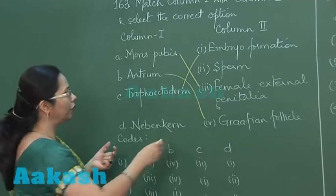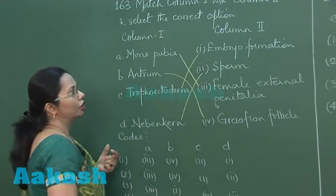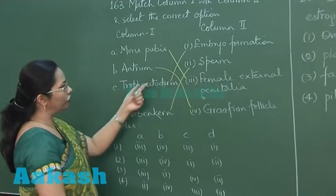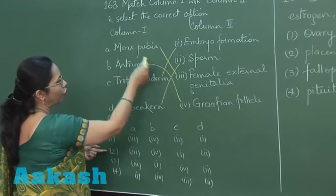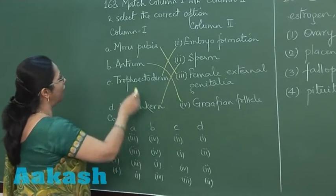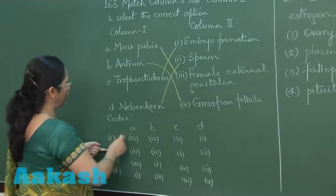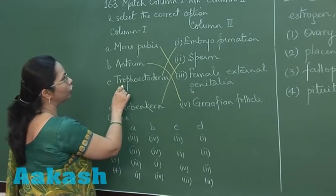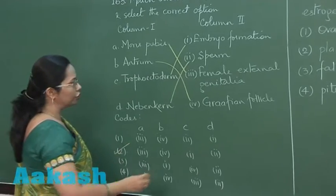So here it is with this 2. If we see this from the codes, we will find that mons pubis with female external genitalia is the third one, B with Graafian follicle is B4, and the third one trophoectoderm with 1 and D with 2. So it is option number 2 and that's the correct answer.